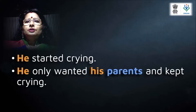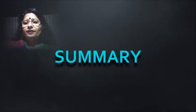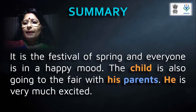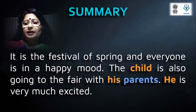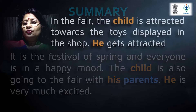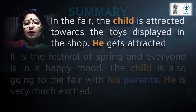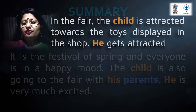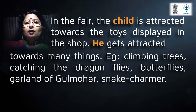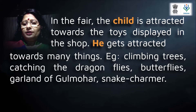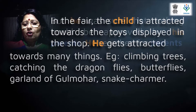The story starts at the festival of spring and everyone is in a happy mood. The child is going to the fair with his father and mother, very excited and happy. At the fair, the child is attracted towards sweets, toys displayed in the shops, and also towards the garden of Gulmohar. As he was attracted towards all those things, he lost his parents in the fair.